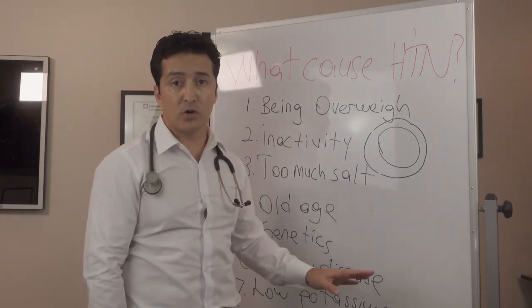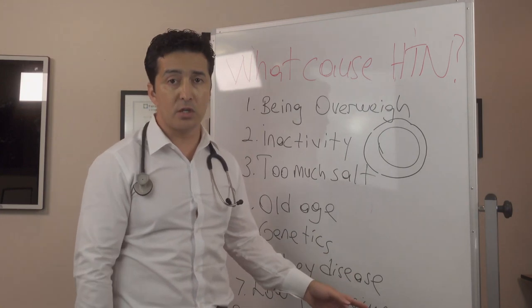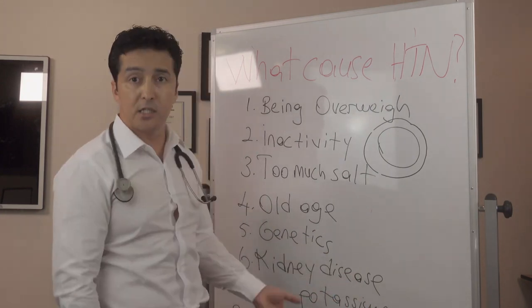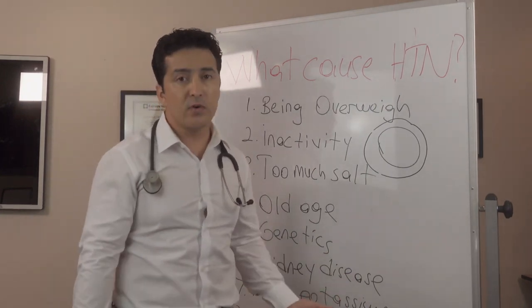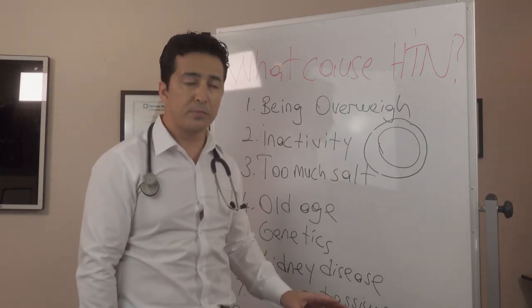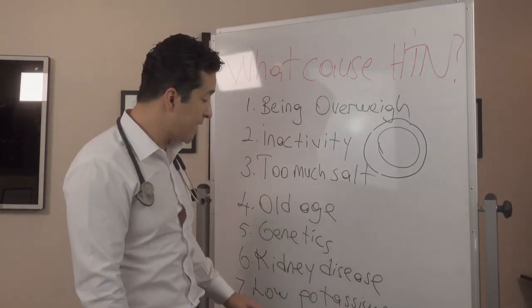Now, you may have high blood pressure just from old age. Then there's nothing you can do about that. You do everything else, but your blood pressure is still high. Then you have to take medications, and we'll talk about more maybe natural medications or natural ways to treat that.